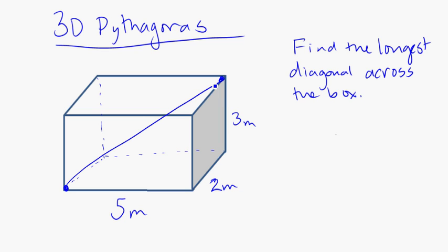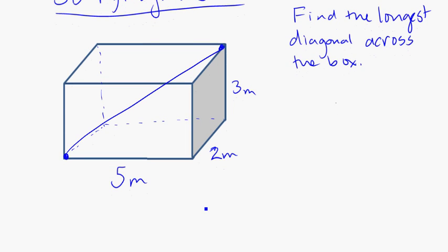In this case, we have to do it in two steps to find out what it is, and one way that's helpful to do it is to look at first doing a right-angle triangle along the bottom of the box.